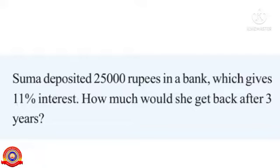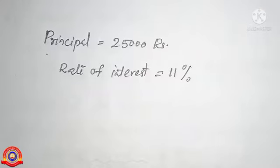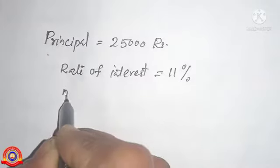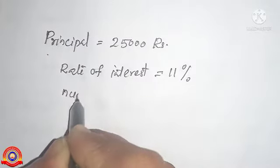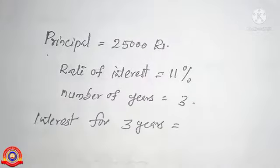How much would she get back after 3 years? In this question, given that money deposited in the bank is equal to 25,000 rupees, and is known as principal. So principal is equal to 25,000 rupees, rate of interest is equal to 11 percentage, and number of years is equal to 3.